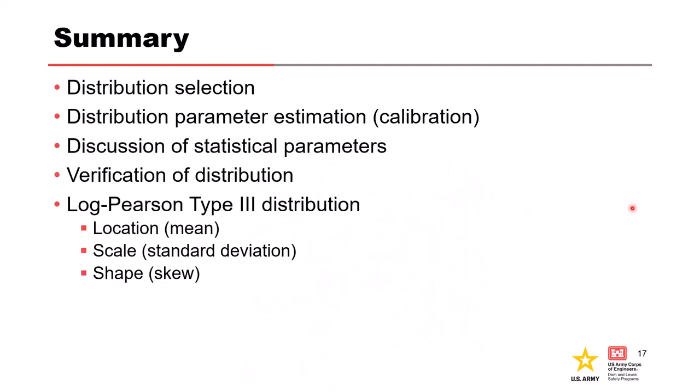All right so in summary we select a distribution and estimate the parameters of that distribution using sample statistics. We can then verify the parameters by computing the distribution and comparing to observed plotting positions. And remember the location or mean for the LP3 moves the curve up and down. The scale or the standard deviation for the LP3 curve defines the slope of the curve and the shape or the skew for the LP3 changes the curvature. And the skew of zero plots as a straight line in this log probability space.